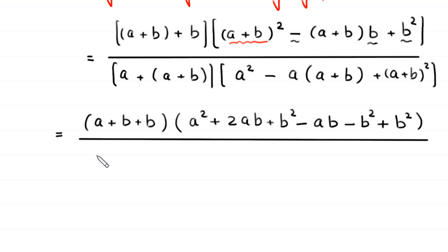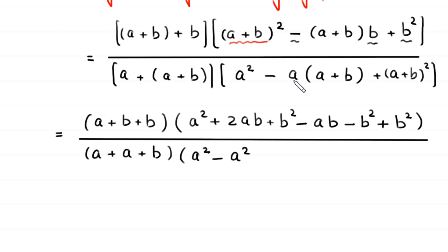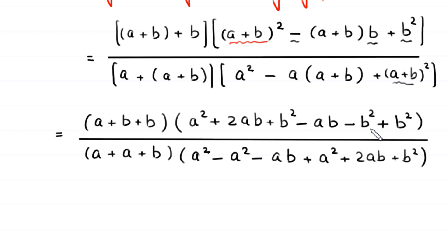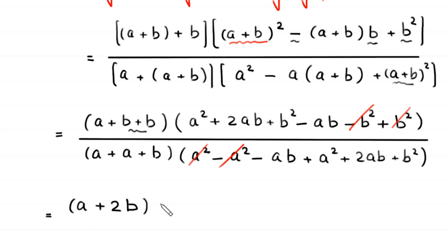For the denominator, applying the identity with x equal to a and y equal to (a plus b), it becomes (a plus a plus b) times [a squared minus a times (a plus b) plus (a plus b) squared]. Expanding: negative a times a gives negative a squared, negative a times b gives negative ab, and expanding (a plus b) squared gives a squared plus 2ab plus b squared. The negative a squared and positive a squared cancel.